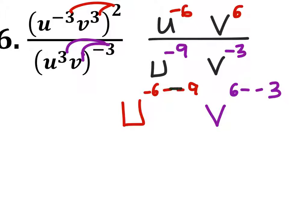And since both of these are minus a negative, we'll really just add these. So we have u to the power of negative 6 plus 9 is 3. And 6 plus 3 is 9.